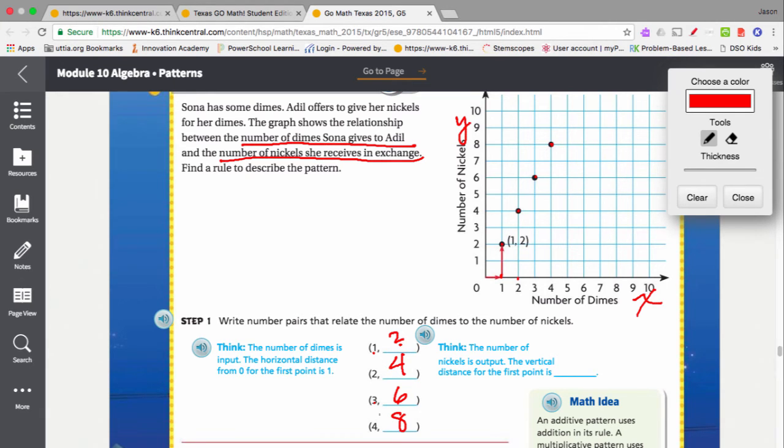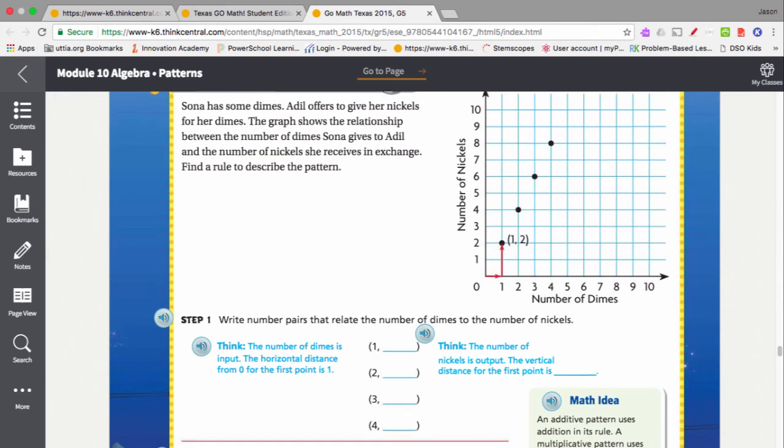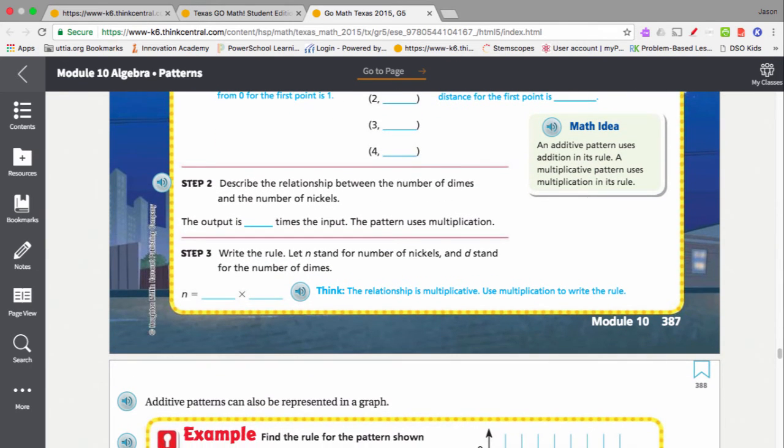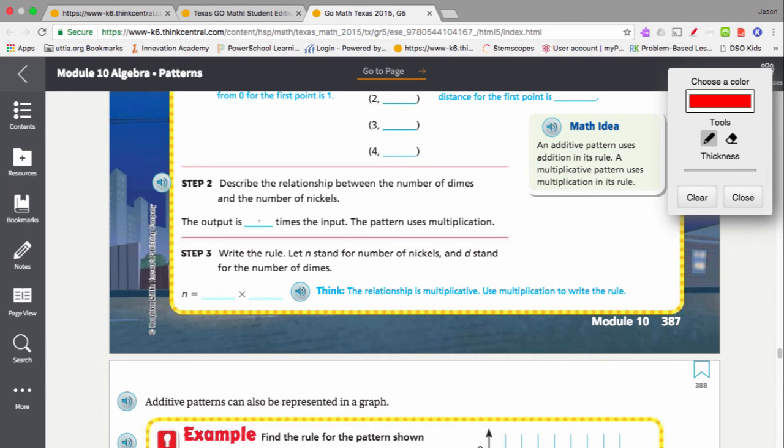Well, here we added 1, but here we added 2. Here we added 3. So it can't be additive because we're not adding the same thing every time. But 2 is double 1, or 1 times 2 is 2. 2 times 2 is 4. 3 times 2 is 6. 4 times 2 is 8. So we could say that the pattern is a multiplicative pattern. And the pattern is that the output is 2 times the input.